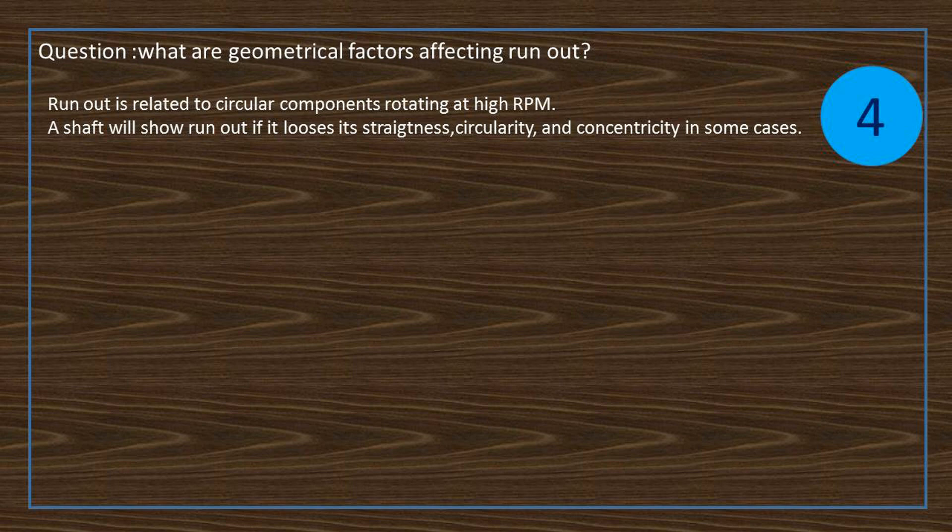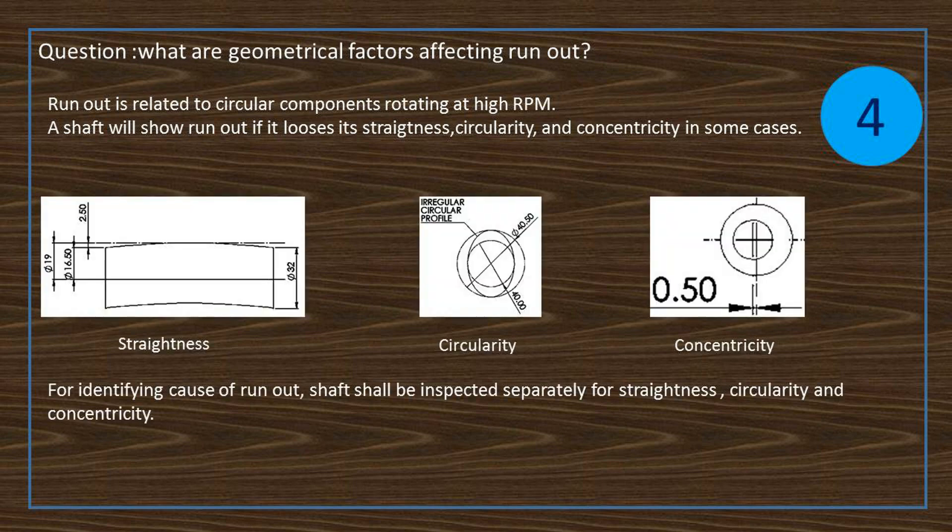Runout is related to circular components rotating at high rpm. A shaft will show runout if it loses its straightness, circularity, and concentricity in some cases. For identifying cause of runout, shaft shall be inspected separately for straightness, circularity, and concentricity.